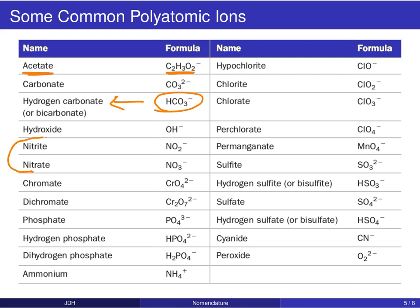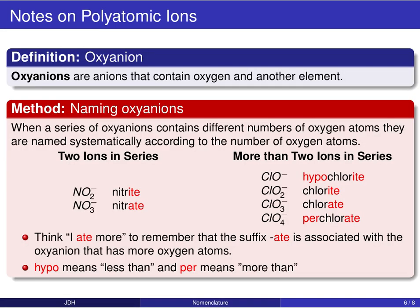A key trend pops up when we have certain types of compounds where you have an atom and then differing numbers of oxygen atoms — like nitrite and nitrate ions. These ions belong to a class of compounds known as oxyanions — you can think of an oxyanion as an oxygen-containing anion.